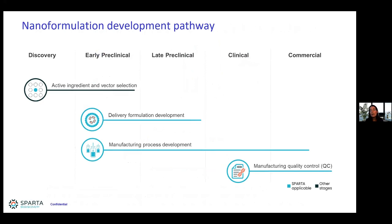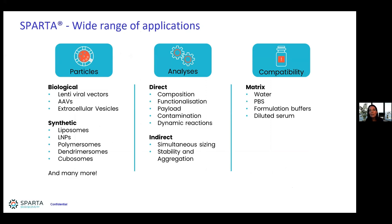The way we see this fitting in is: once you've discovered your active ingredient or viral vector, we can come in to help with delivery formulation development, throughout the manufacturing process development to understand differences within formulations that might affect functionality, and also downstream as a quality control within your manufacturing process. This has now been validated in many different systems, with many papers currently in press.